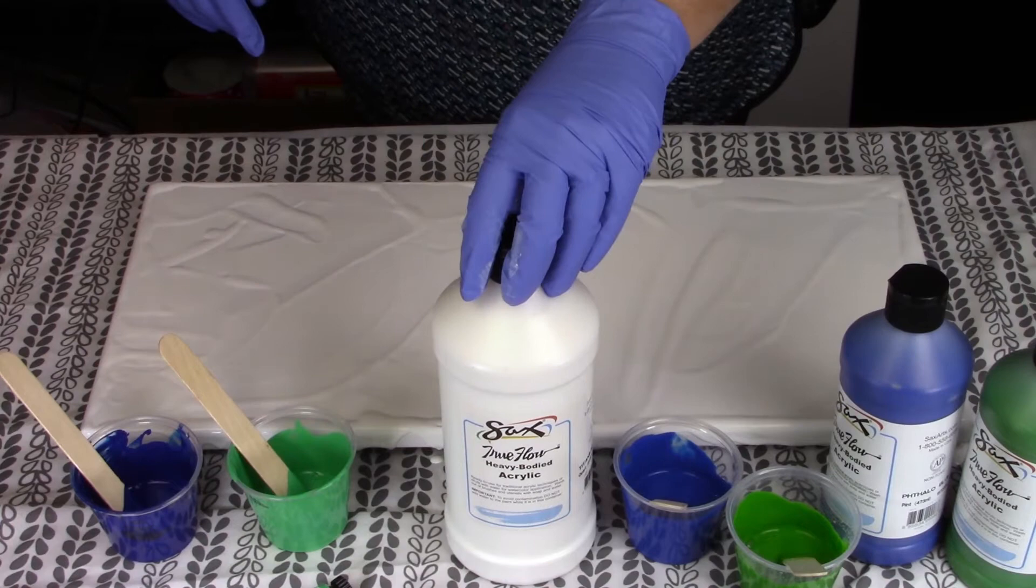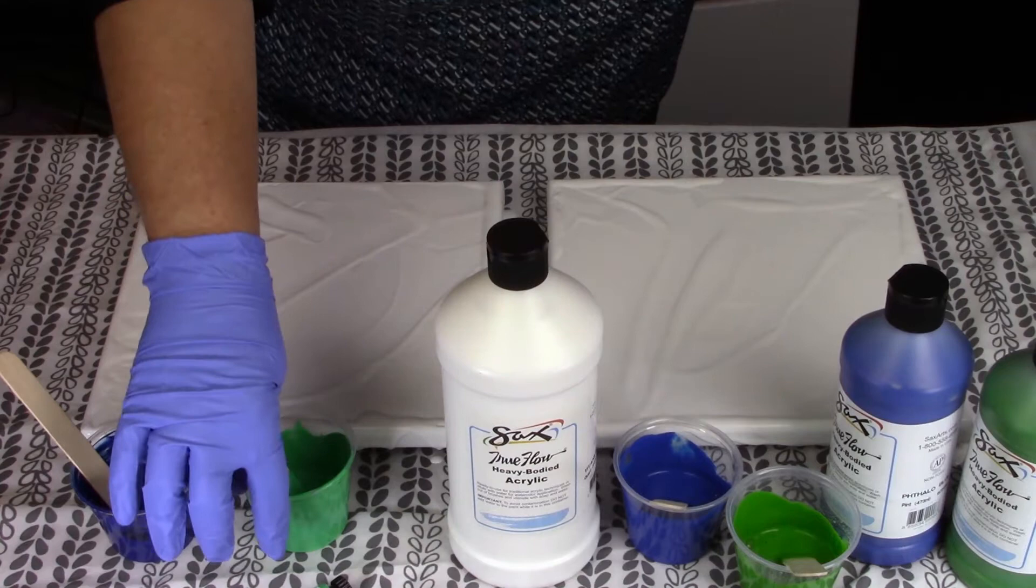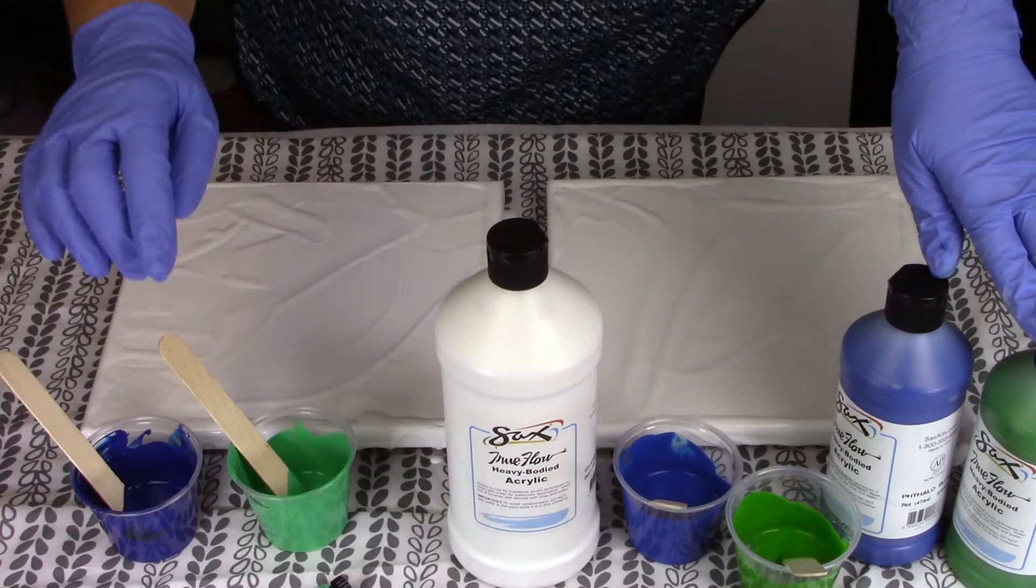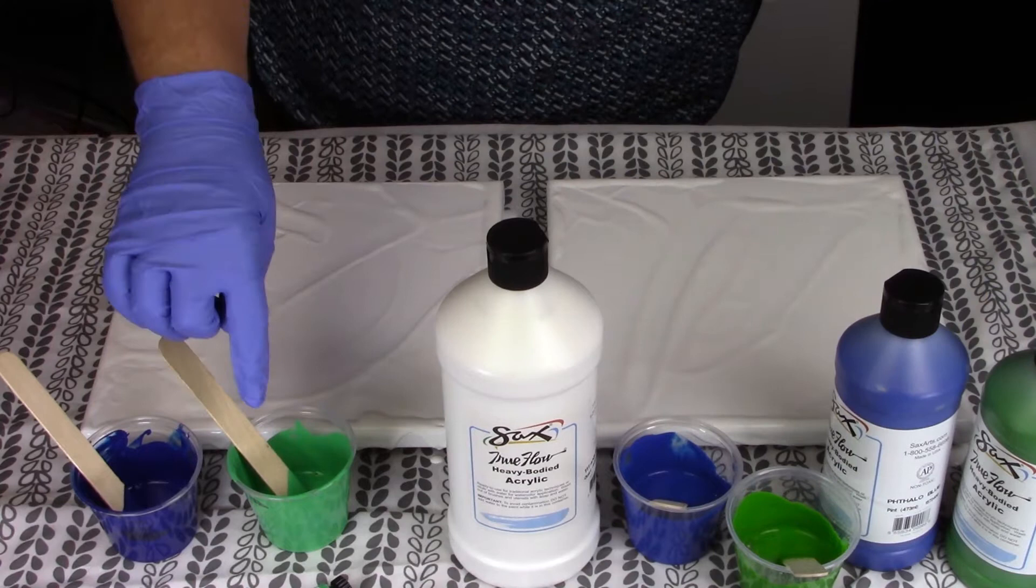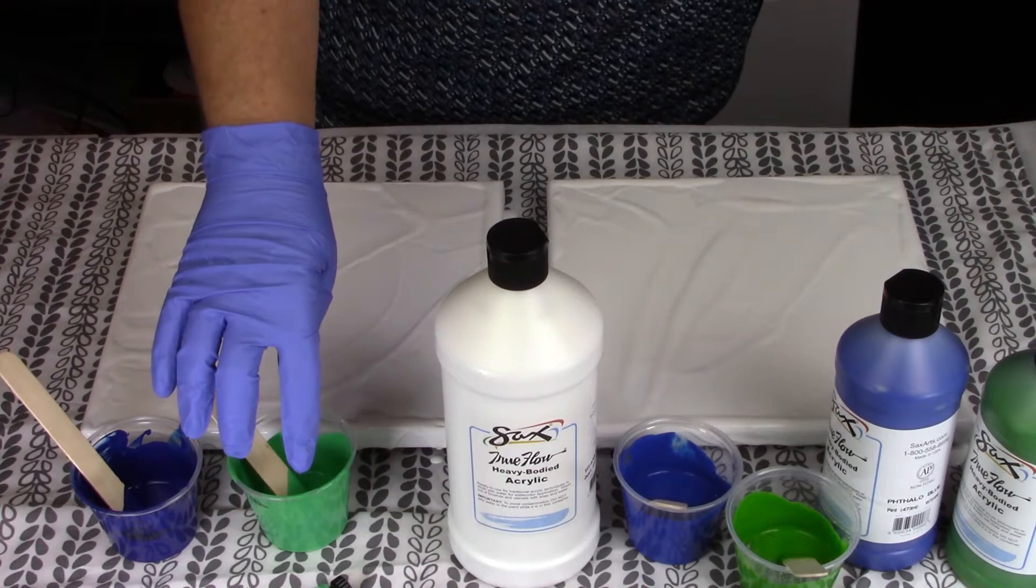And then we've got Arteza's Emerald Green, same as the Saks, and the Phthalo Blue in Arteza, same color as the Saks. So these are exactly the same colors of paint just from different companies. This one's a TruFlow Heavy Acrylic. This one's a Premium Acrylic which comes out very similar in consistency. I think Arteza's might be a little bit thicker.